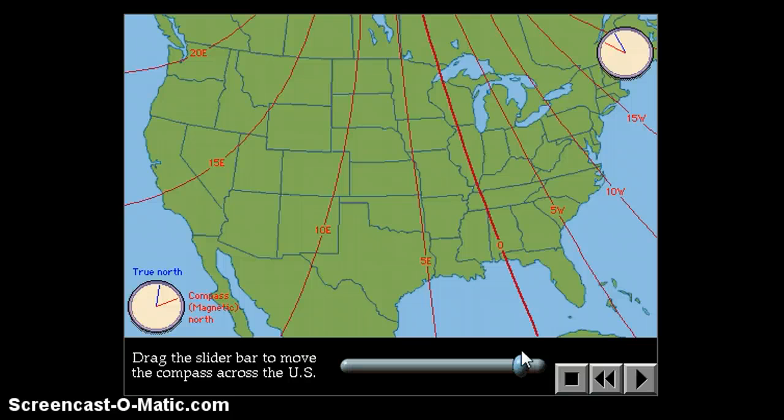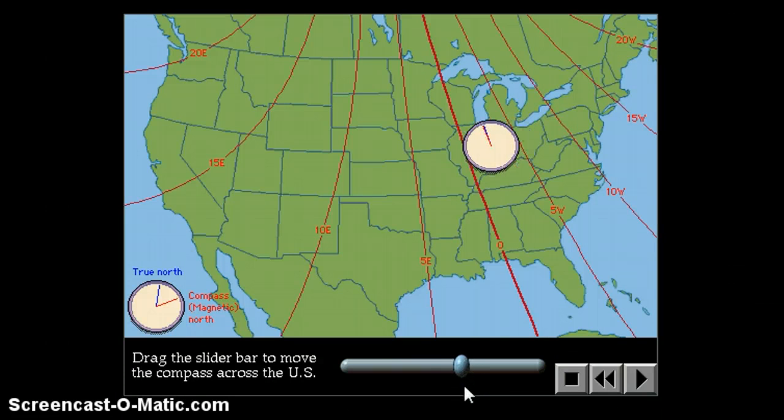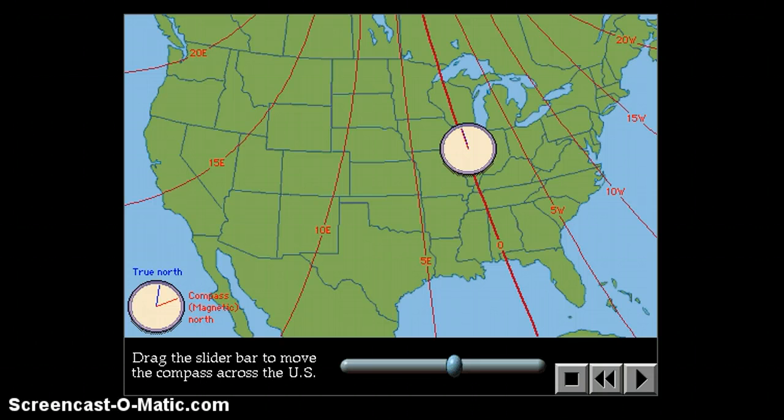If you get way out to, say, like Maine, you're almost a significant number of degrees off from the true north pole if you're using a magnet or a compass to navigate. In Wisconsin, we're pretty lucky because the difference between the magnetic and true north is very small where we are.